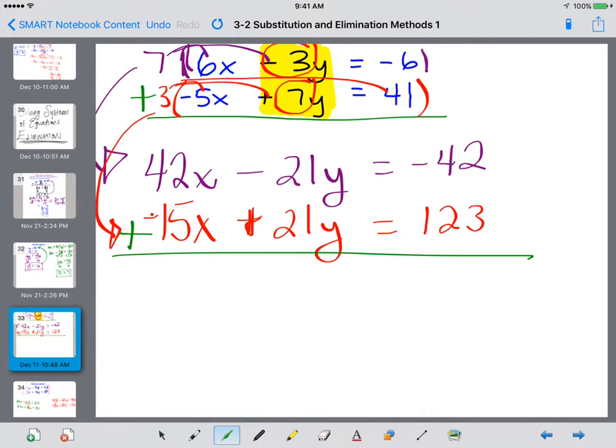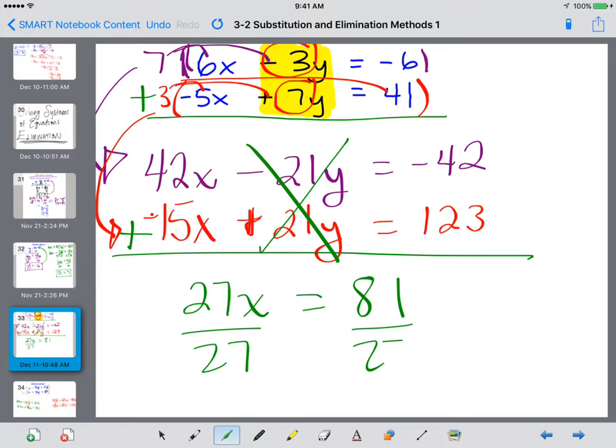In which we are ready to eliminate the y's. I'm going to add these together. So we have 42x plus a negative 15x, that's going to leave me with 27x. The y's eliminate, which we want to happen. And we have negative 42 plus 123, and that is going to leave me with 81. So now we divide. 81 divided by 27, and I get x equals 3.